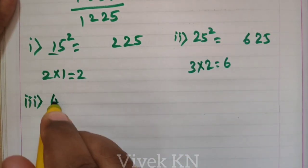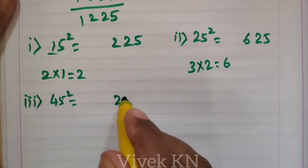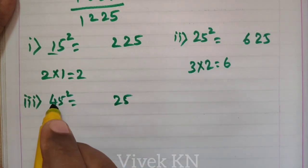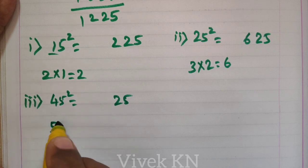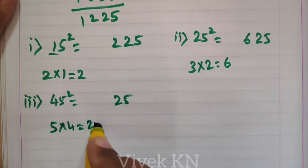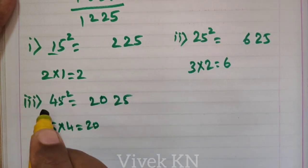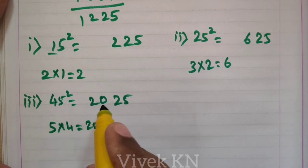Next, 45 square. 5 square is 25. The number that comes after 4 is 5. 5 times 4 is 20. So, the value of 45 square is 2025.